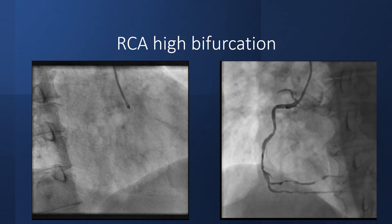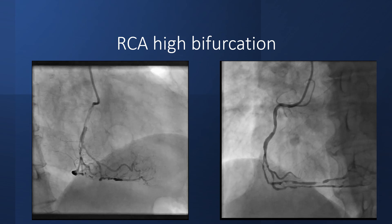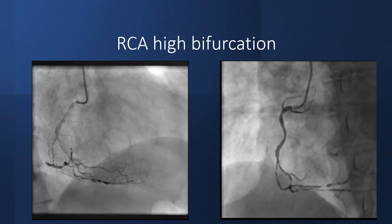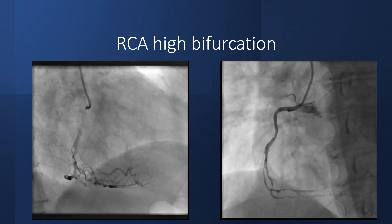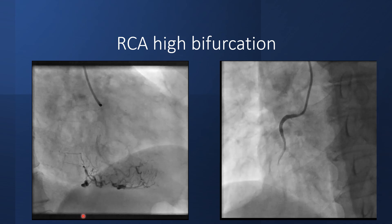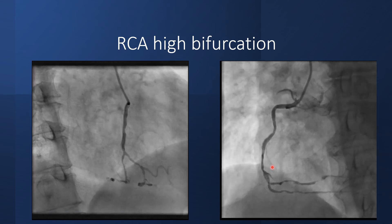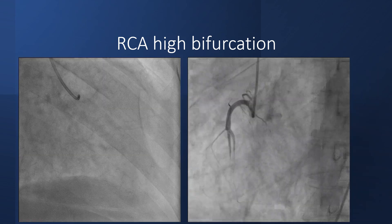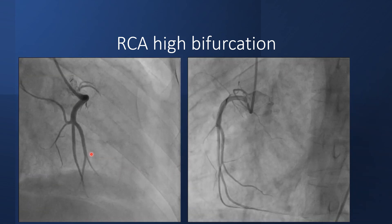The RCA usually bifurcates at the crux of the heart into the PDA and the PLV, but in some cases there is a high bifurcation, more proximal. In this case, the bifurcation is at the middle part of the RCA, while in this second case, the bifurcation is more proximal.